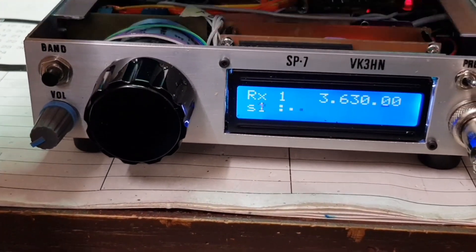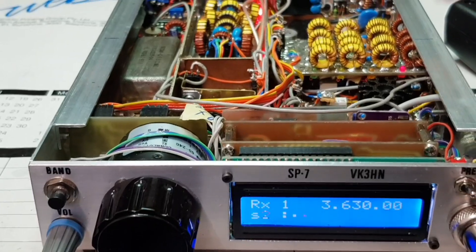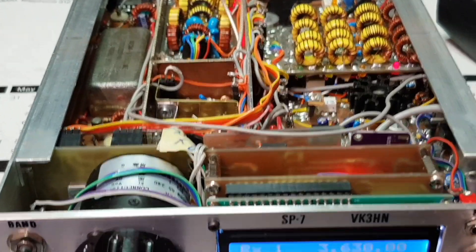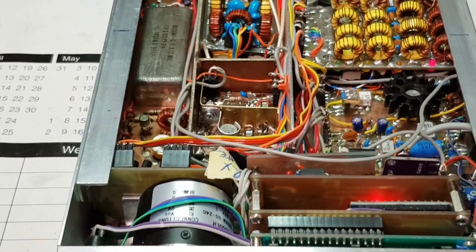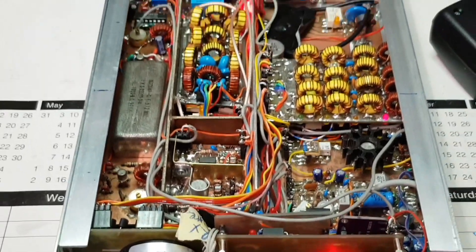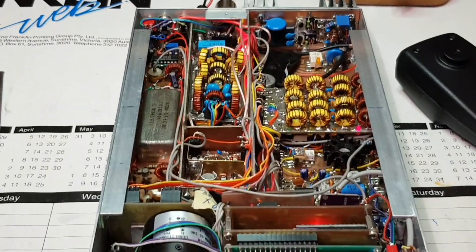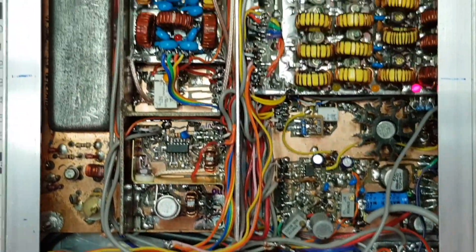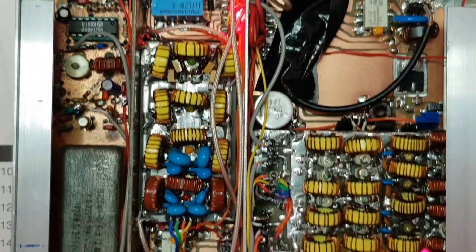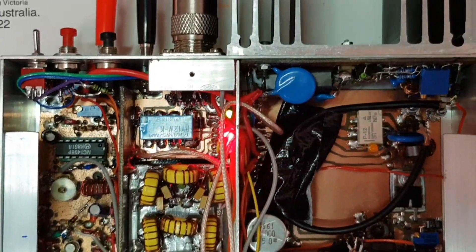Nearly everything in this transceiver is a one-off. The case is built from angle aluminium and sheet. Each of the boards are custom designed to fit the space, a mix of surface mount and discrete components. Each module was built separately, tested, and installed.